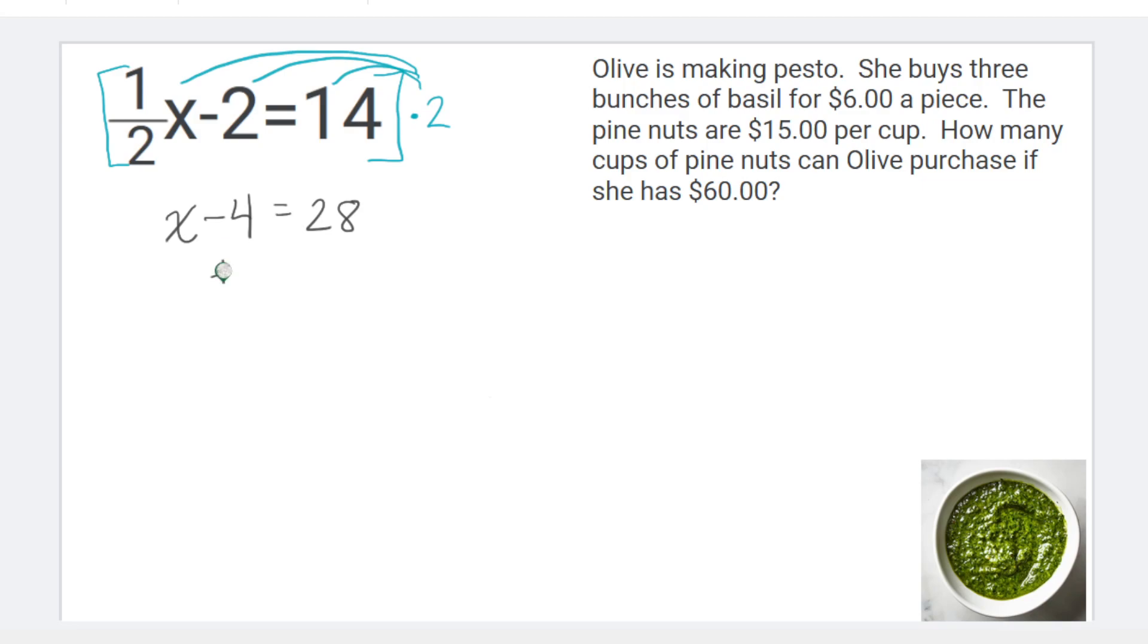So then of course I have 4 being subtracted here. So the inverse operation of that 4 would be to add. And so 28 plus 4 gives me 32. Make sure that when you do these inverse operations, you're doing it to both sides of the equal sign.